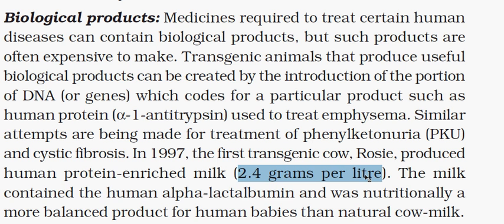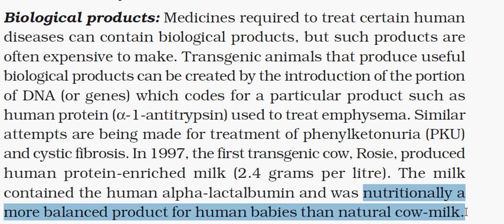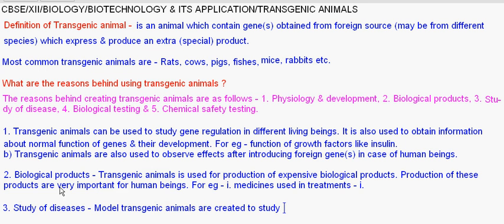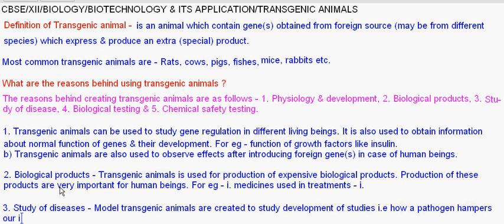Now, number three: study of diseases. Model transgenic animals are created to study the development of diseases — that is, how a pathogen hampers our defense mechanism, the immune system, and the agents which cause diseases.